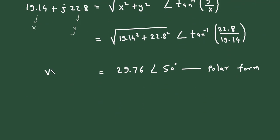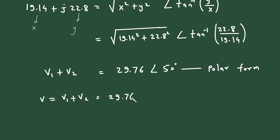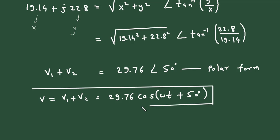This phasor V1 + V2 = 29.76∠50° can be written in polar or rectangular form. Converting to time-domain format: V = V1 + V2 = 29.76 cos(ωt + 50°) volts. This is the final answer in time-domain format. This is how we can add two sinusoids by using phasors.